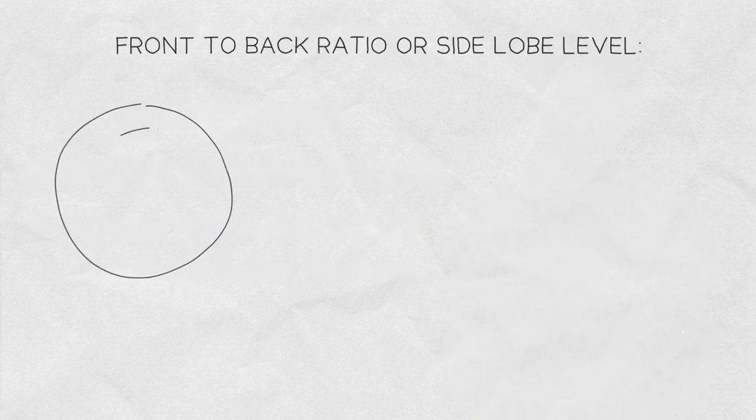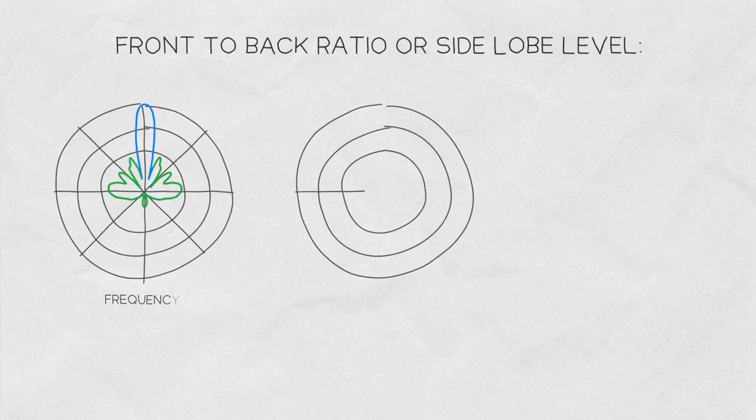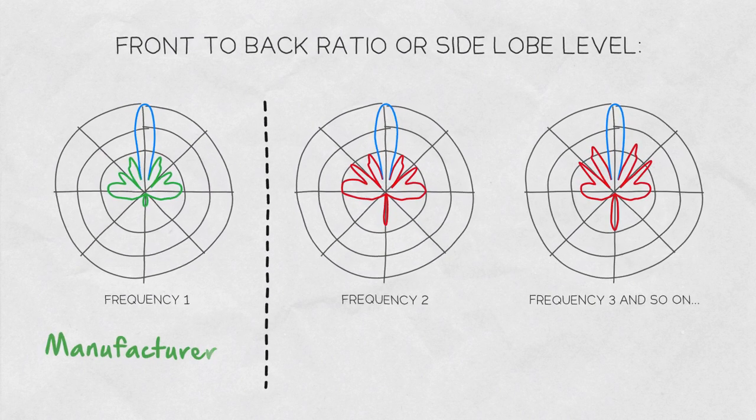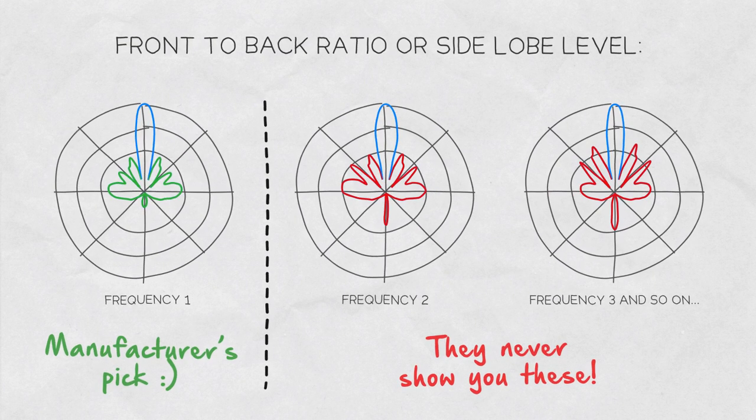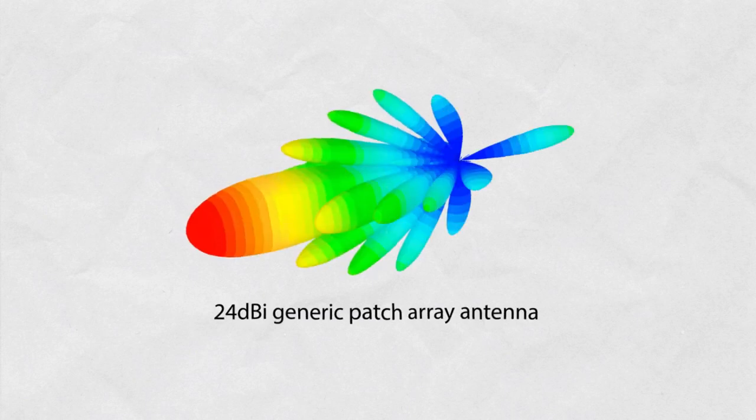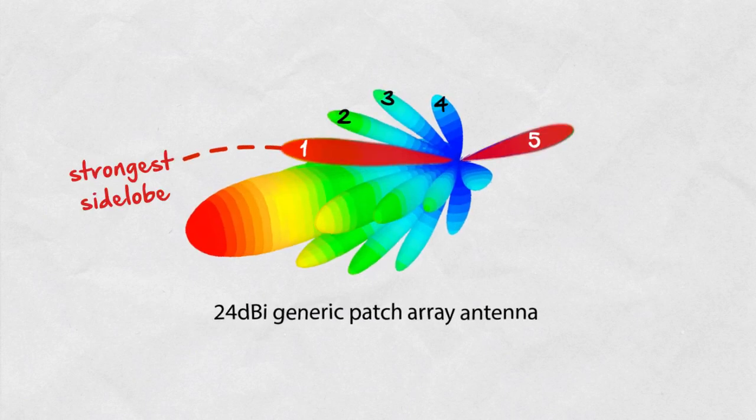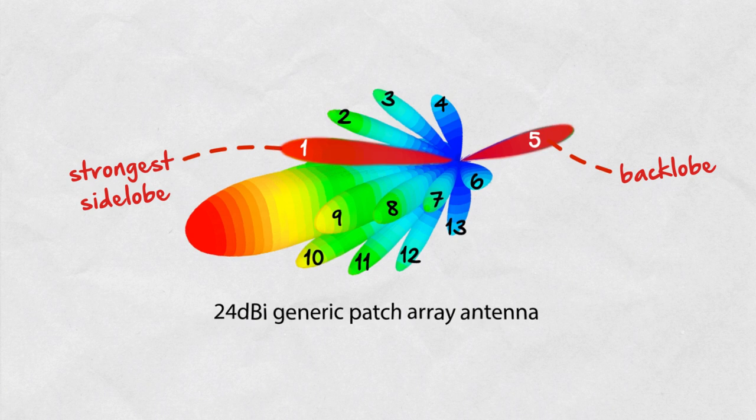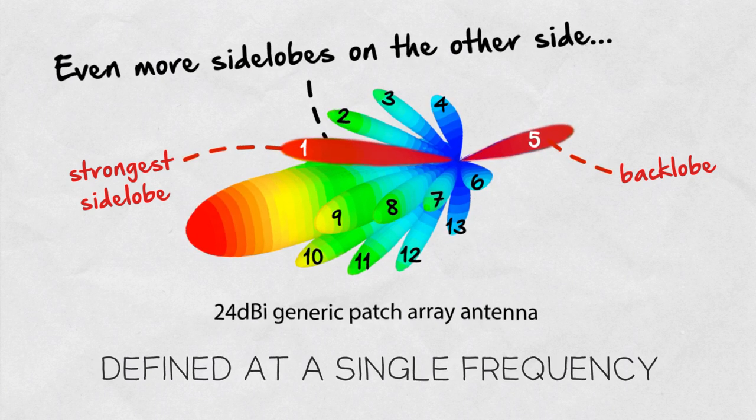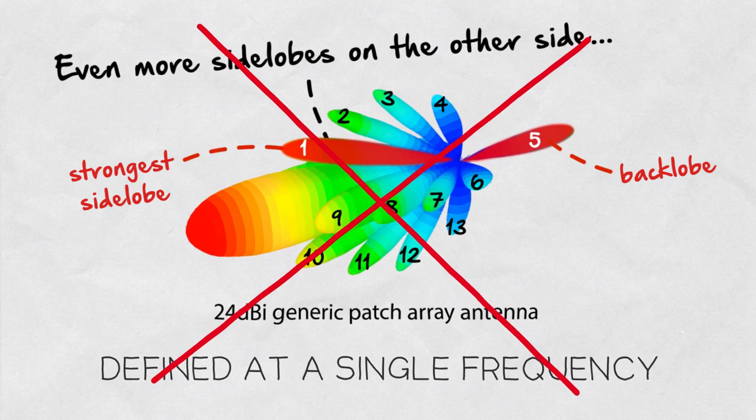In contrast, the front-to-back ratio or side lobe level is commonly defined based on a single slice of the radiation pattern at a single frequency point, giving manufacturers a huge gray area to make antennas look better by picking the best snippet of the radiation pattern. Eventually, front-to-back ratio and side lobe level only define one of the many side lobes an antenna might have at a single frequency, which makes these parameters practically useless in real life.